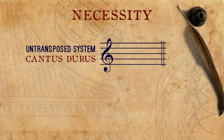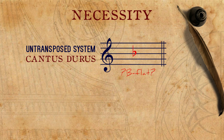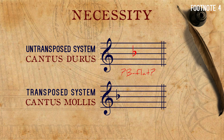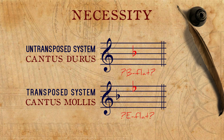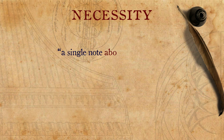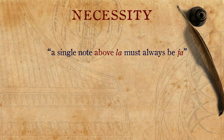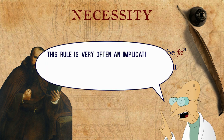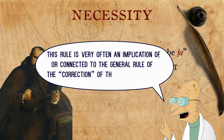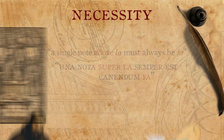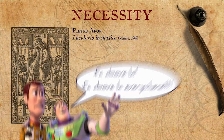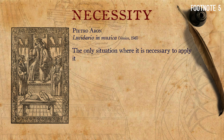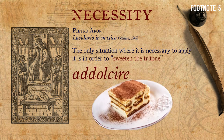If we are in an untransposed system, cantus durus, the flat in question will be mainly B-flat. And if we are in a transposed system, cantus mollis, with the B-flat in the key signature, the flat in question will be mainly E-flat. A common statement in regards to ficta is that a single note above la must always be fa. In Latin it sounds better: Una nota super la semper est canendum fa. This rule is very often an implication of, or connected to, the general rule of the correction of the imperfect fourth. Aaron, in 1545, criticized the overusing of the fa above la rule by musicians, and stated that in fact the only situation where it is necessary to apply it is in order to sweeten the tritone — ad dolcire il tritono.